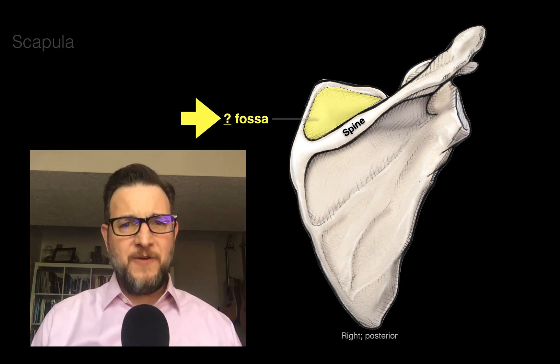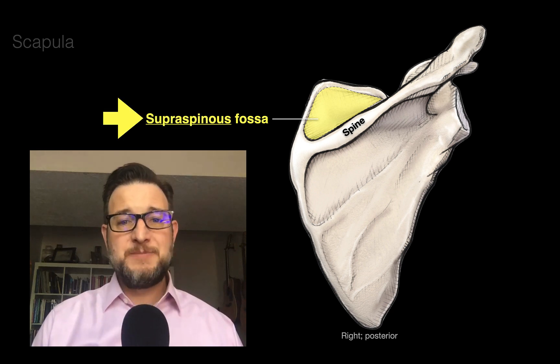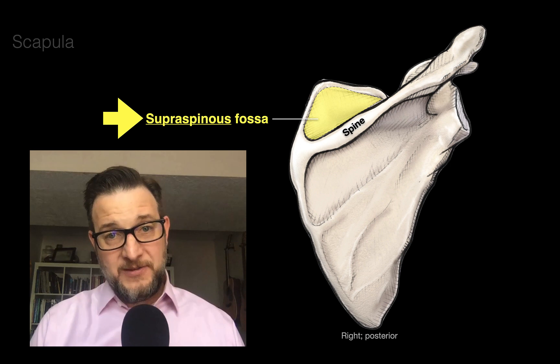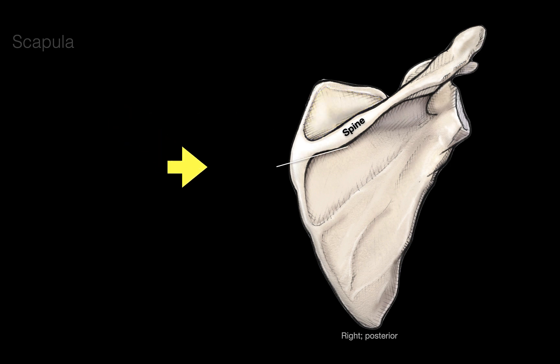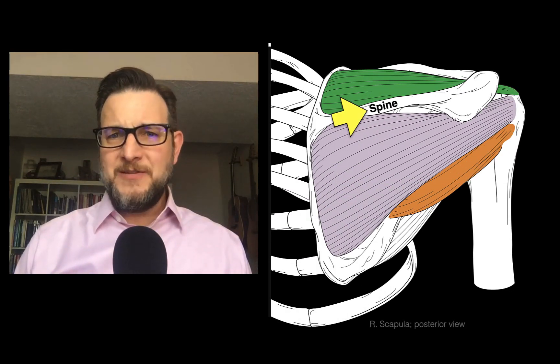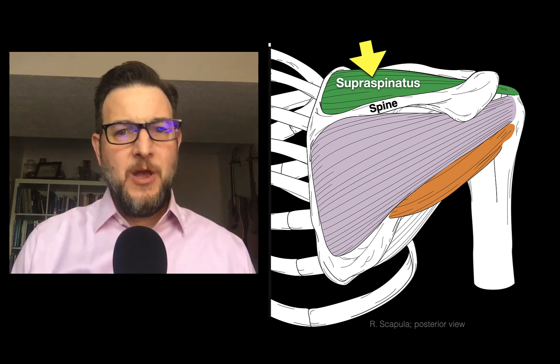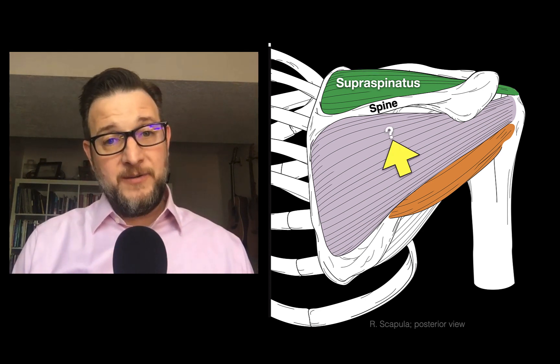Anatomists asked: what do we call this fossa above the spine? A fossa is a shallow concave surface. This fossa is on the back of the scapula but above the spine, so they called it the supraspinous fossa — literally the fossa superior to the spine. The fossa below the spine is called the infraspinous fossa. The muscle in the supraspinous fossa is called the supraspinatus, and the muscle in the infraspinous fossa is called the infraspinatus. This is the benefit of knowing bony landmark names — it helps you understand why muscles get their names.